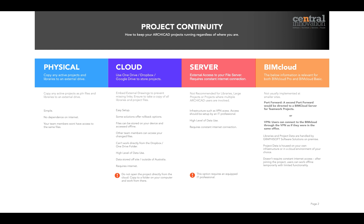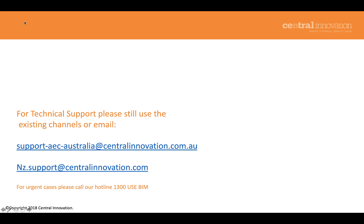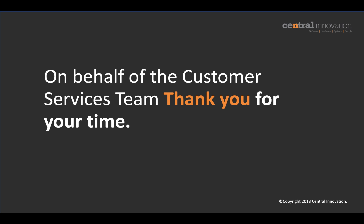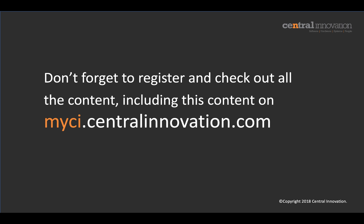That wraps up these two documents. I hope this has been worthwhile for you and you now have a better understanding of ARCHICAD licenses and accessing them externally, and how you might be able to go about project continuity. For technical support, please still use the existing channels, or email us within Australia at support.aecaustralia@centralinnovation.com.au, or in New Zealand at nz.support@centralinnovation.com. For urgent cases please call our hotline 1300 USE BIM. Thank you very much for your time. Please register and check out all the content, including this webinar, on myci.centralinnovation.com.